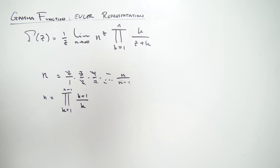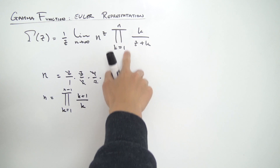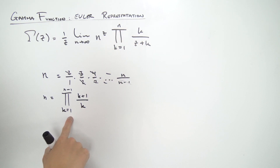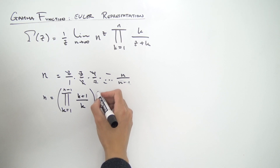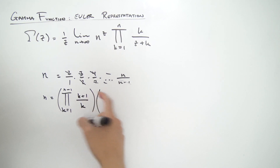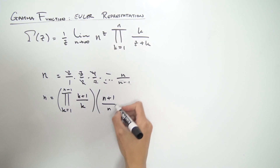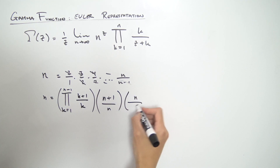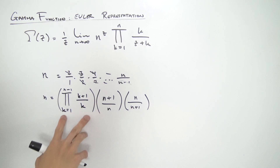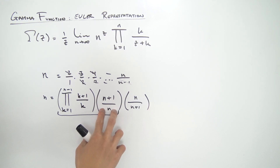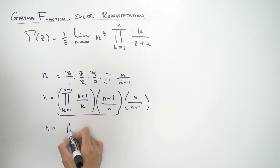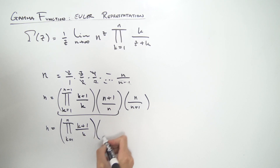This product isn't ideal because the bounds don't match up with the other product — ideally we want this to run from 1 to n. So let's multiply by the term at k=n and then divide by it. Plugging n in gives (n+1)/n, and dividing by it gives n/(n+1), so the net result is multiplying by 1. Combining these, n equals the product from k=1 to n of (k+1)/k times n/(n+1).